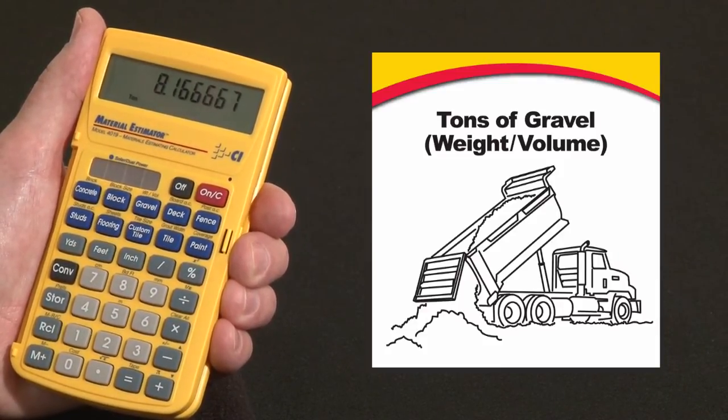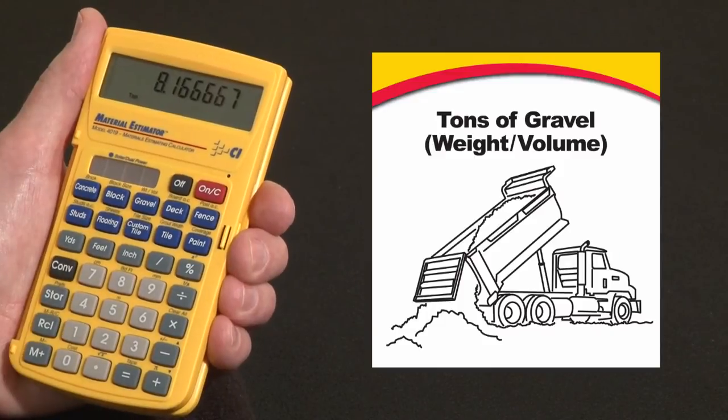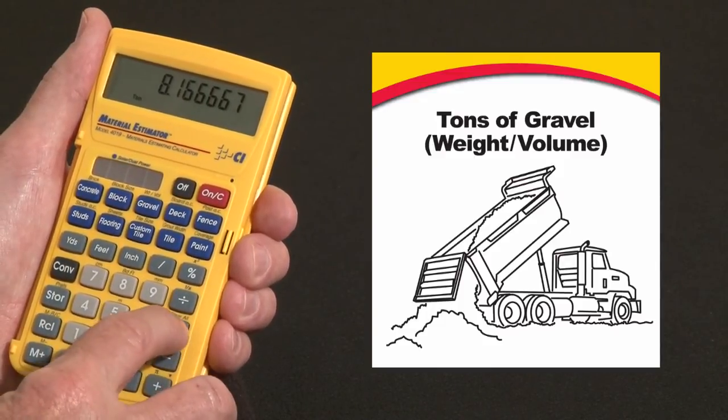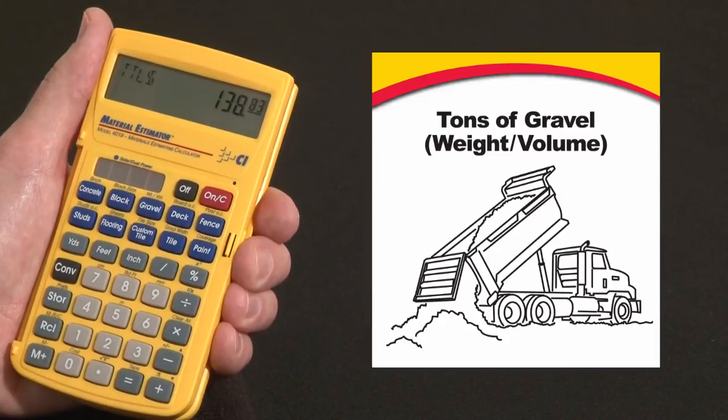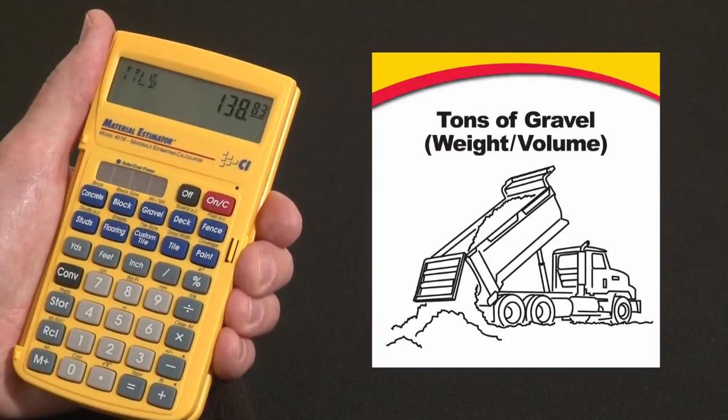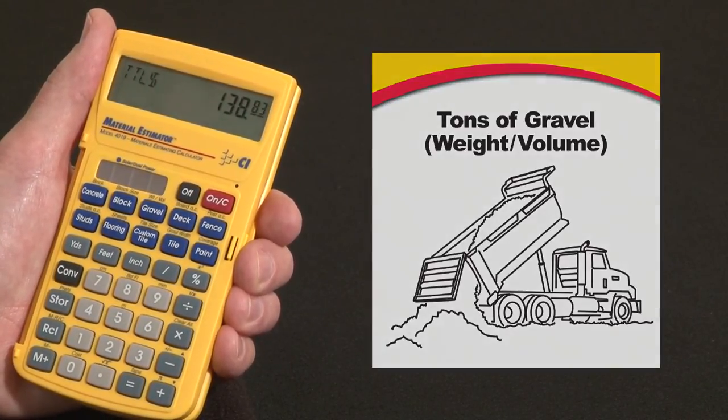If you'd like to, you can find the cost of this. Say it's $17 a ton. We say times 17, convert to cost. You've got about $138, $139 worth of DG coming in.